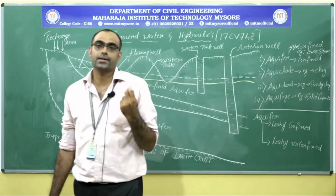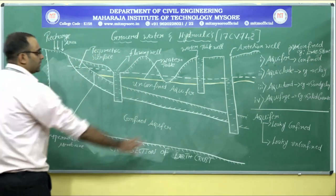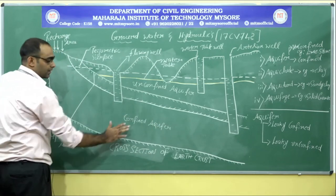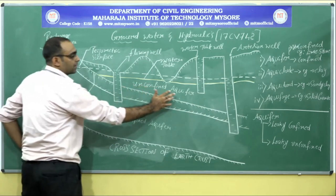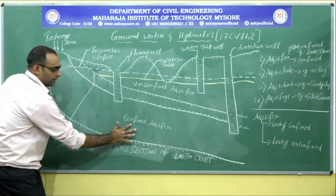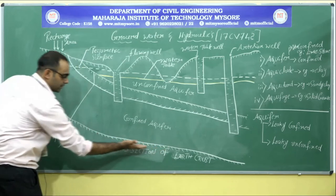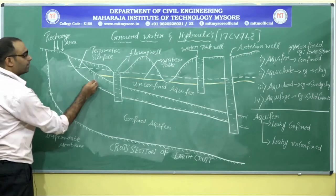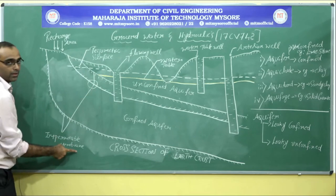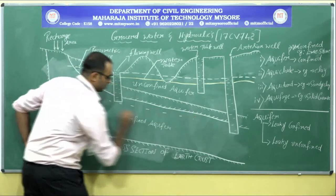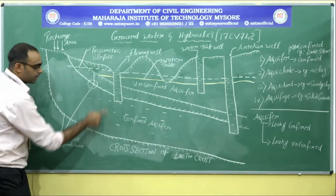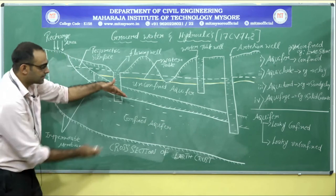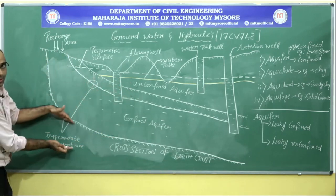There are two kinds of aquifer: the confined aquifer and the unconfined aquifer. In the diagram, the confined aquifer is at the bottom part and the unconfined aquifer is at the upper part. For the confined aquifer, the bottom portion has an impermeable membrane and the upper part is also an impermeable membrane. A confined aquifer is a structure sandwiched between two impermeable membranes.